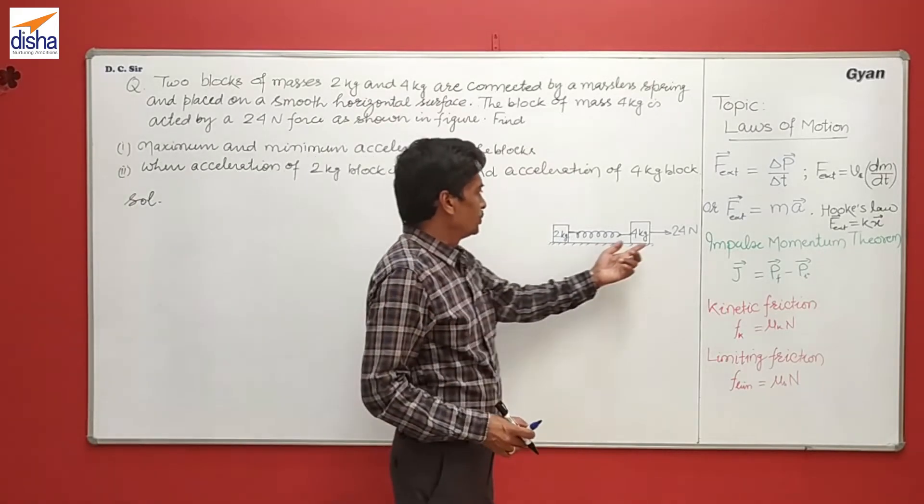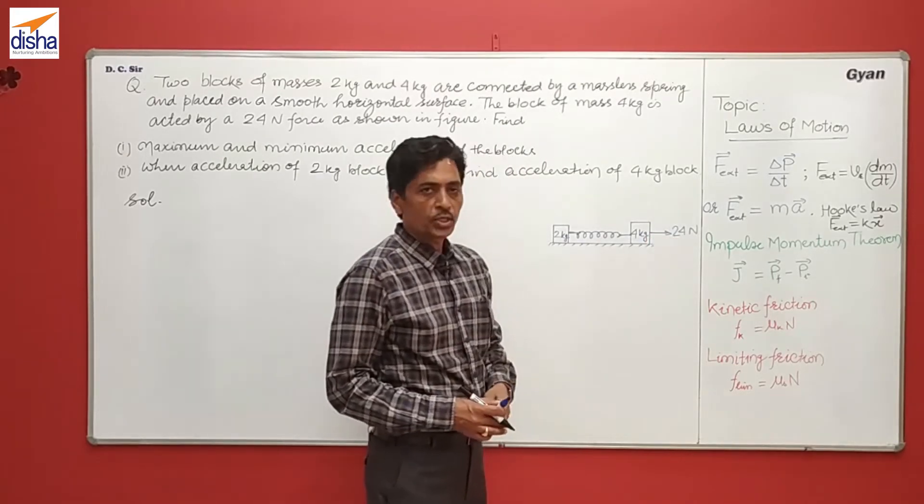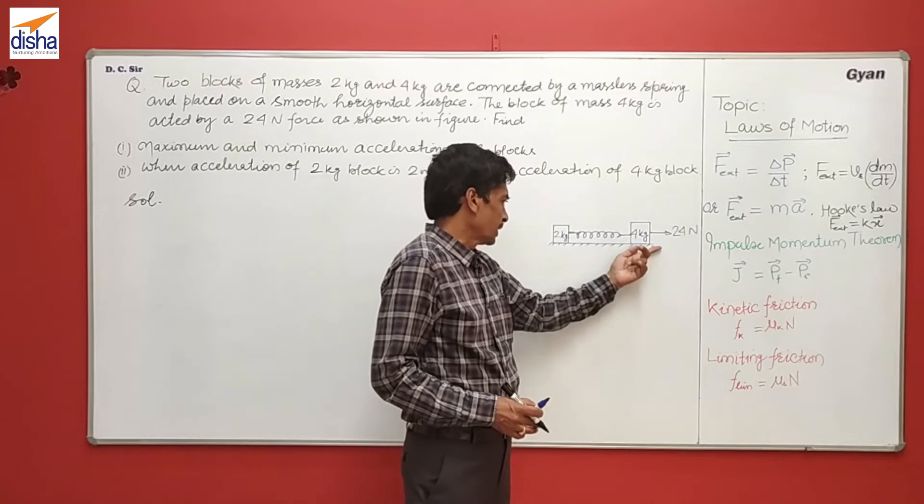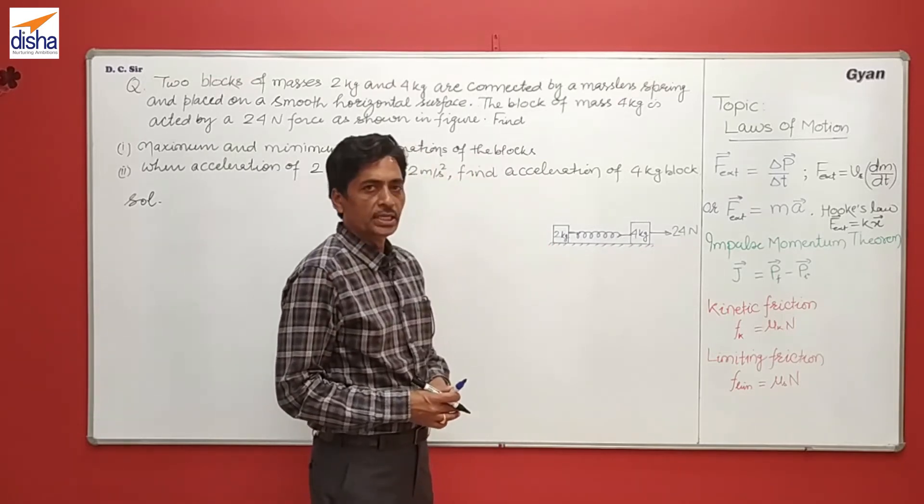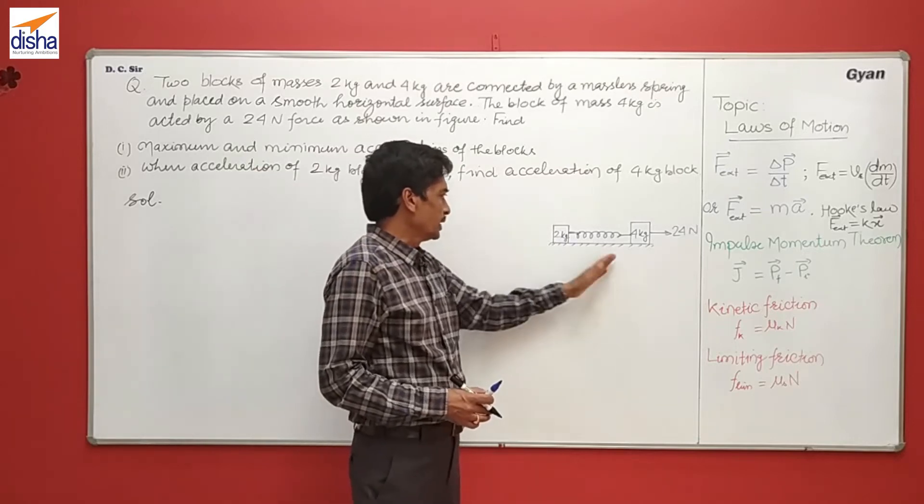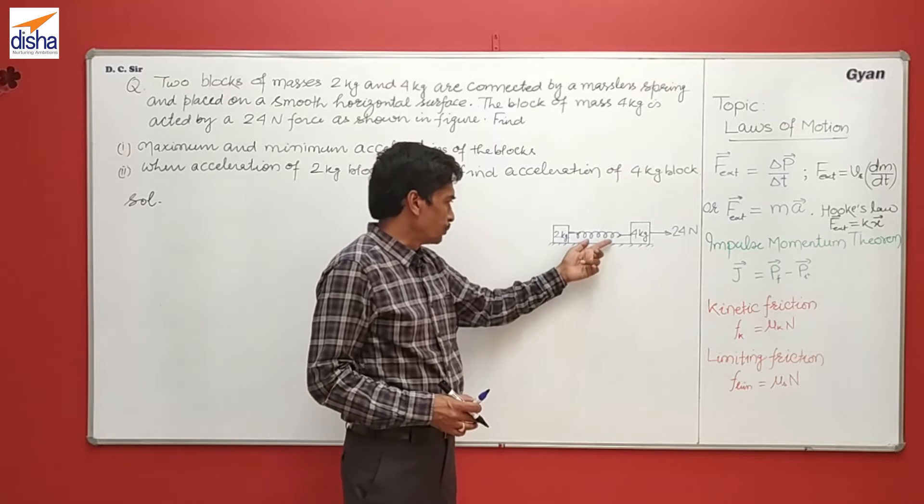Initially, the force is acting on the 4 kg block, so it has the maximum acceleration initially, and there is no force on the 2 kg block, so its initial acceleration is zero. As soon as the 4 kg block starts moving towards right, the spring starts stretching.